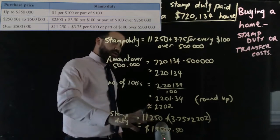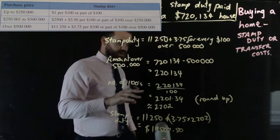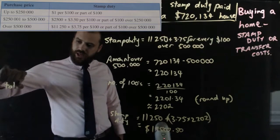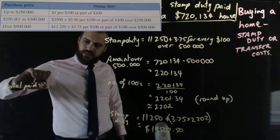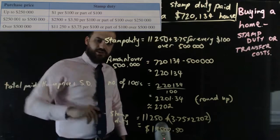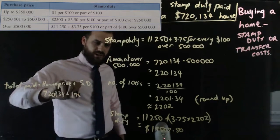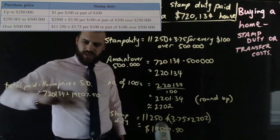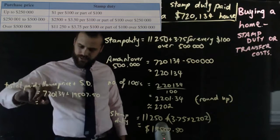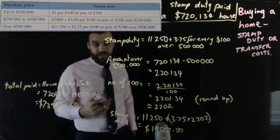That's the stamp duty the buyer of a house worth seven hundred and twenty thousand one hundred and thirty-four dollars would have to pay. You might also get a question asking how much in total does the person have to pay. Total paid equals the house price plus the stamp duty: seven hundred and twenty thousand one hundred and thirty-four, plus nineteen thousand five hundred and seven dollars fifty, giving a total of seven hundred and thirty-nine thousand six hundred and forty-one dollars and fifty cents.